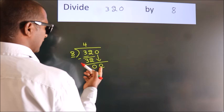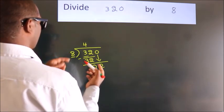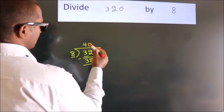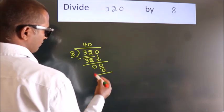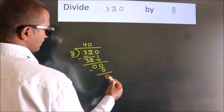When do we get 0? In 8 table. 8 times 0 is 0. Now we subtract. We get 0.